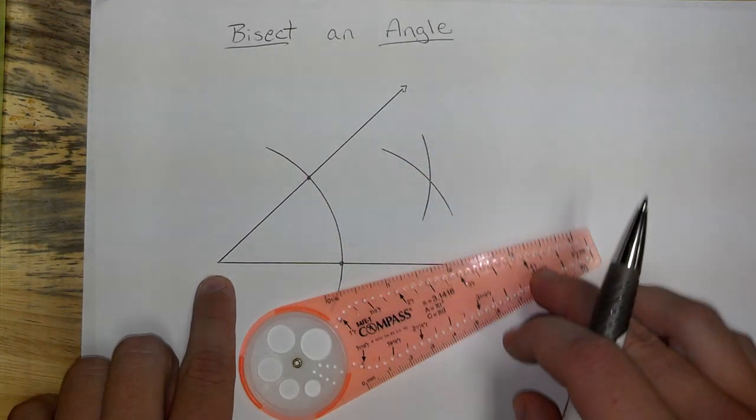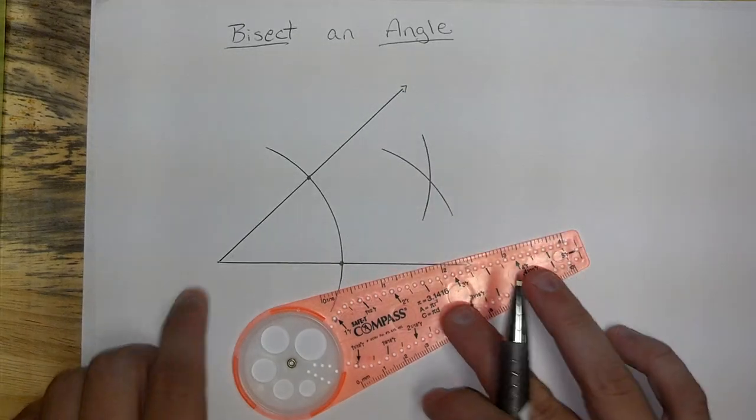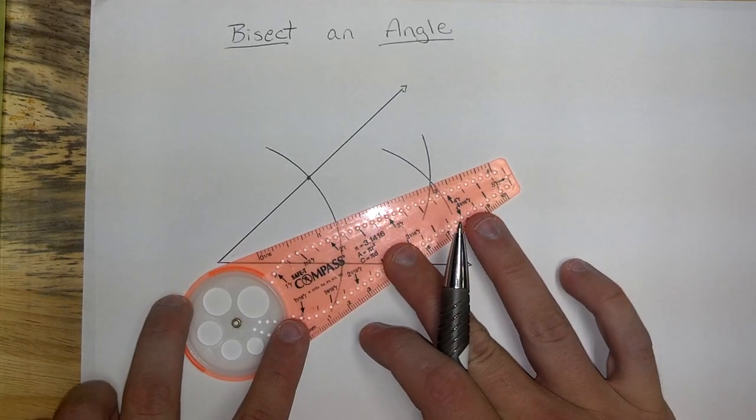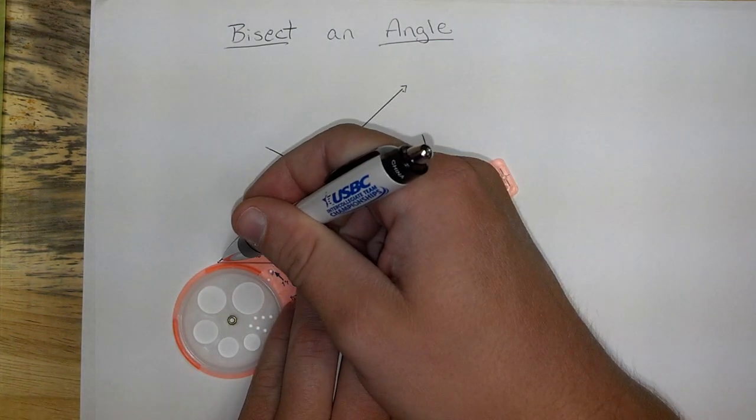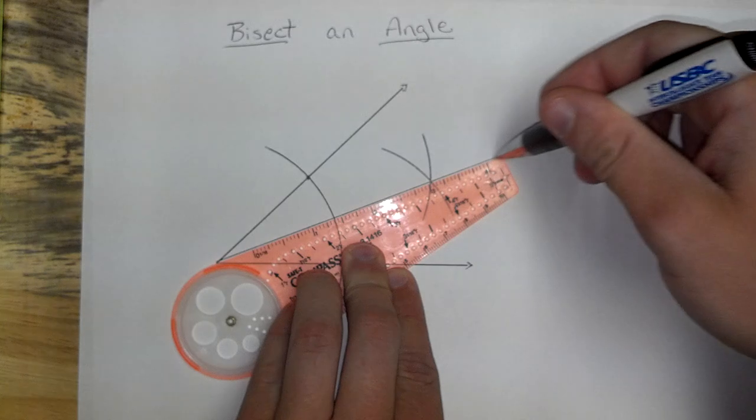Now, if you connect the vertex and that point where your two arcs crossed, that is going to perfectly bisect this angle. Let's see if it worked out. Whoops.